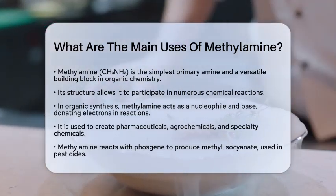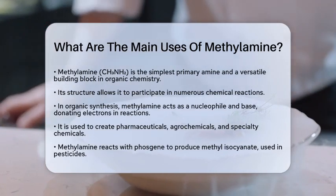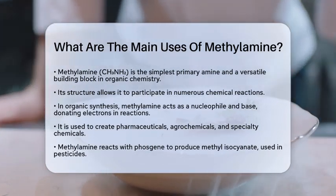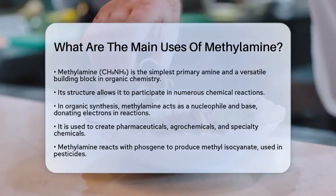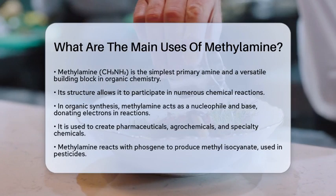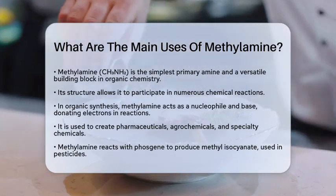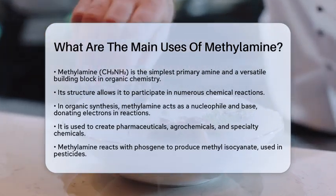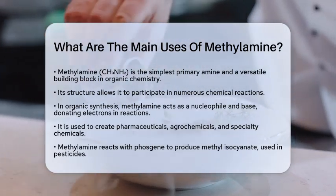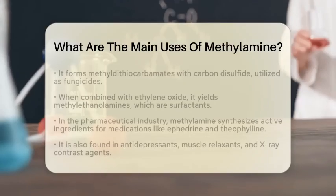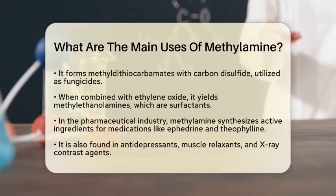For instance, when methylamine reacts with phosgene, it produces methyl isocyanate, a compound used in making pesticides. It also reacts with carbon disulfide to form methyl dithiocarbamates, which are used as fungicides.